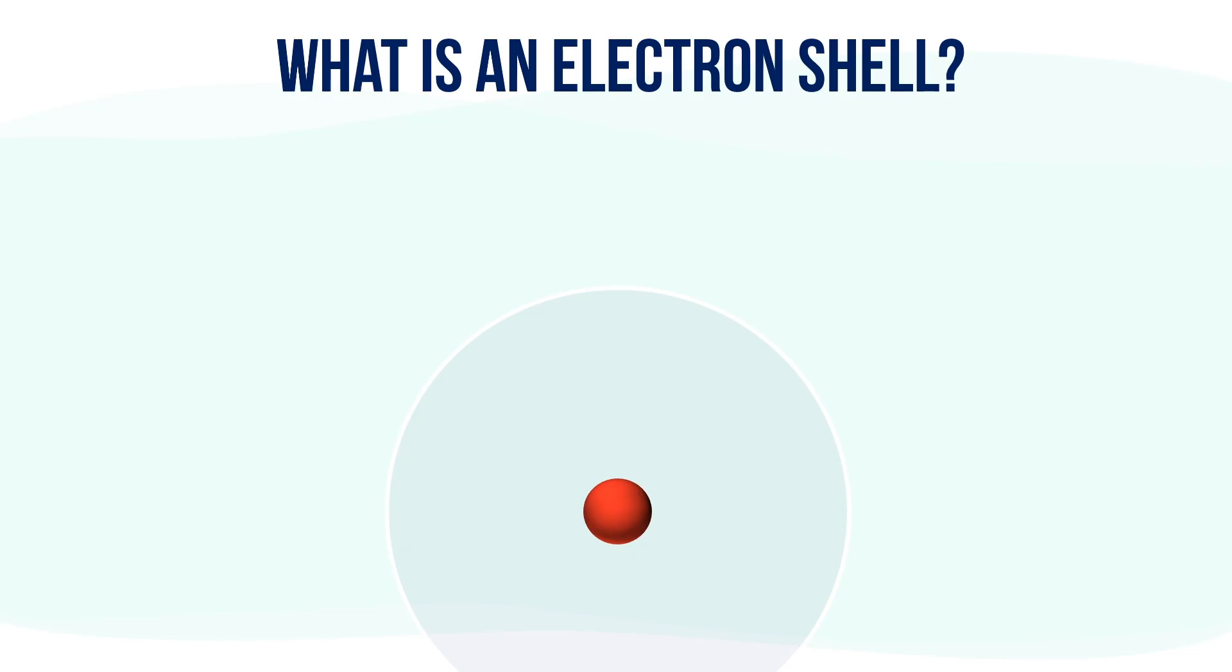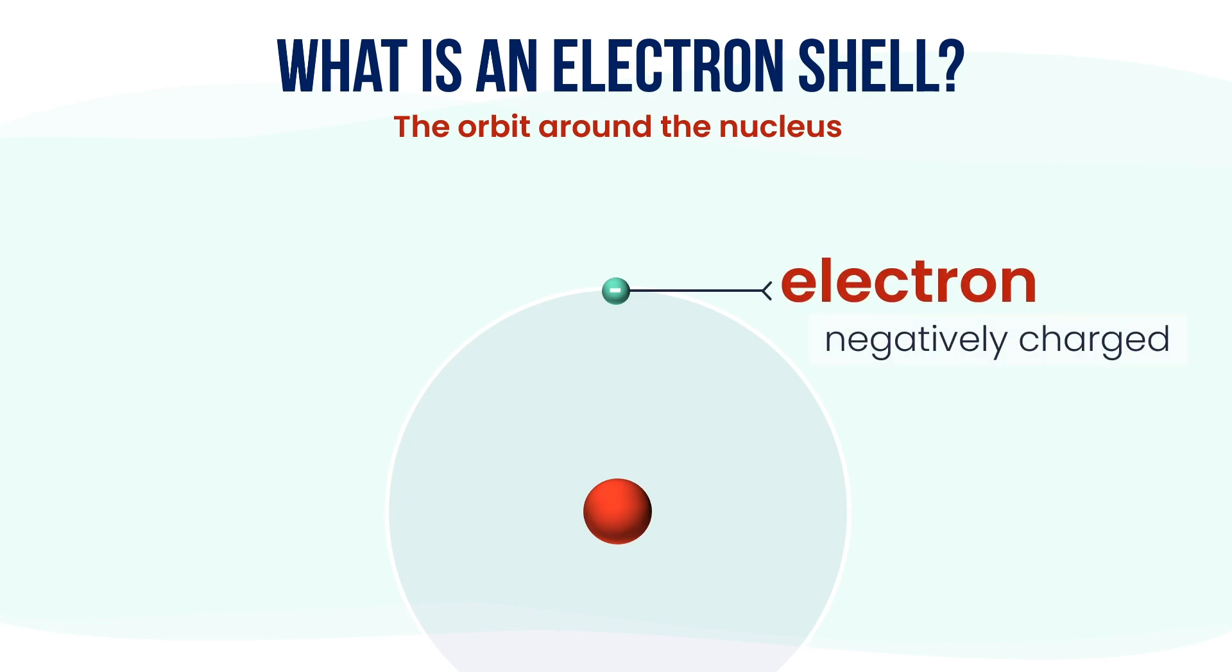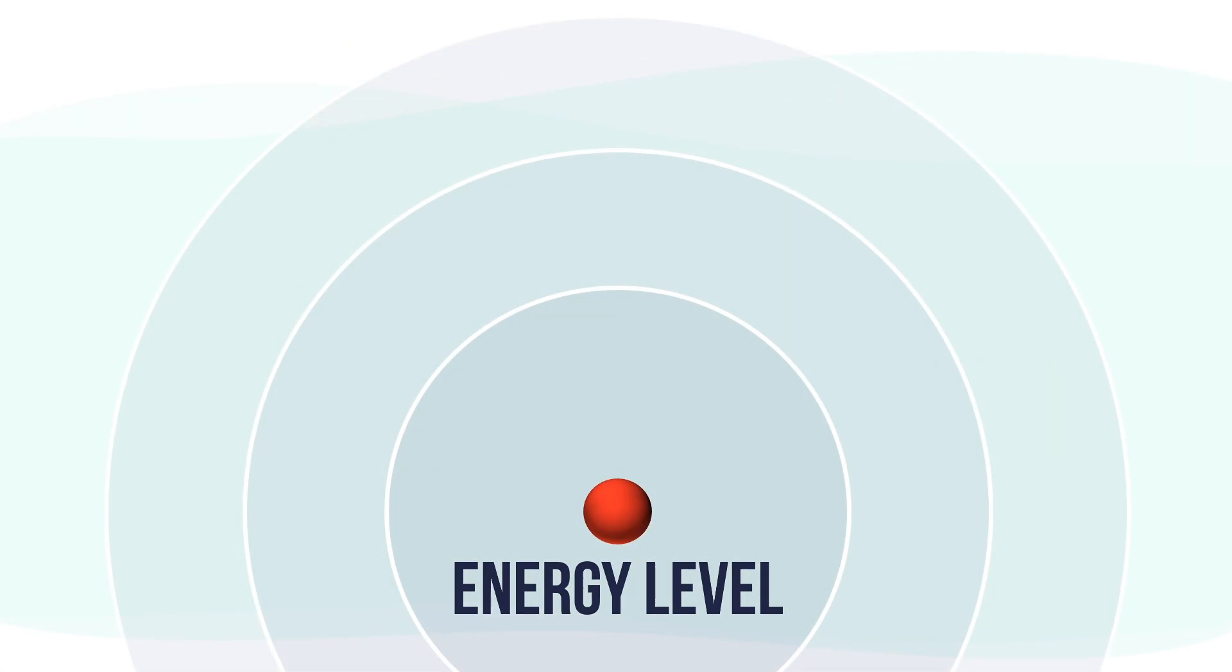Surrounding the nucleus are the electron shells. This is where the electrons are found. These electrons move very fast around the nucleus, kind of like satellites orbiting a planet. Each shell or orbit is actually an energy level. The closer the shell is to the nucleus, the lower the energy. The farther it is, the higher the energy. So electrons in the outer shells have more energy than those in the inner shells.